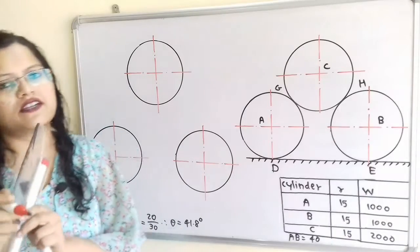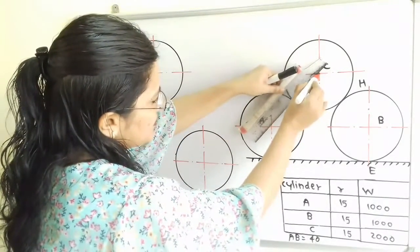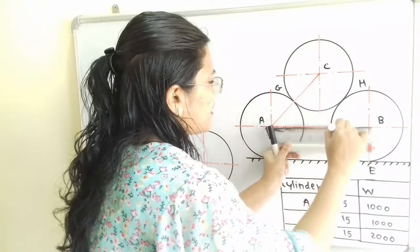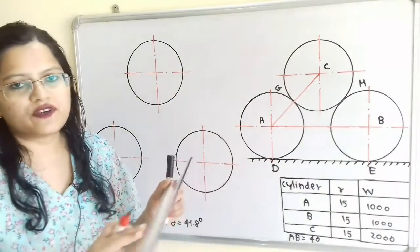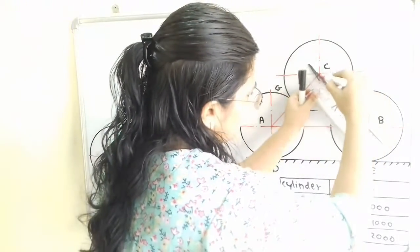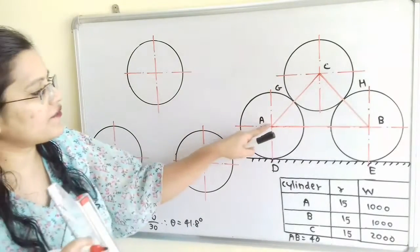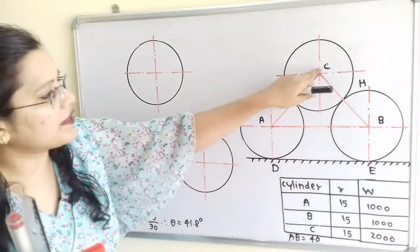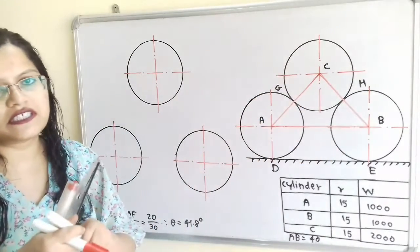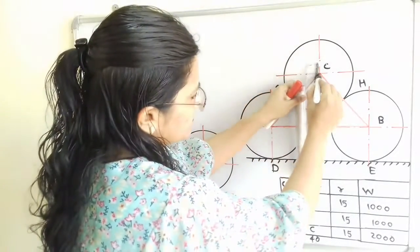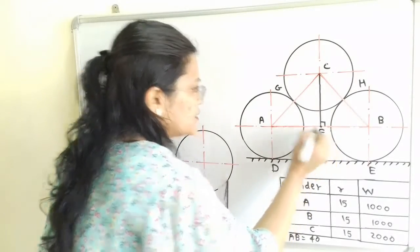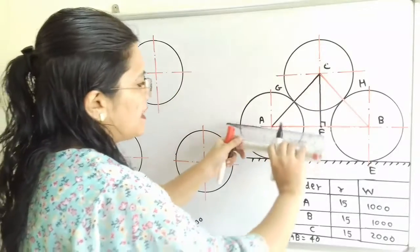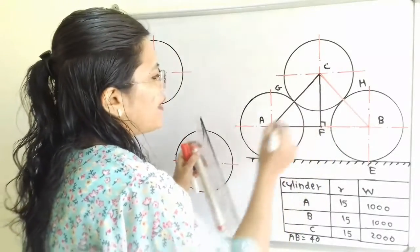First we will join the centers of these three cylinders — joining center A and C. Centers A and B are connected with the string of length 40 cm. We will also join center B and C. We need to find the angle of inclination of lines AC and BC with the vertical. We will draw a perpendicular line passing through point C on AB, and call this point of intersection F. Here is line AC and here is the distance AF. We need to find this angle theta.